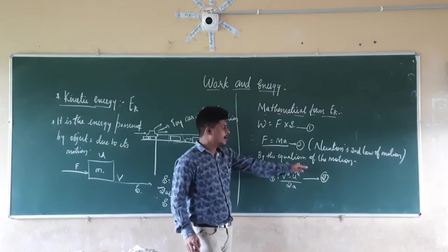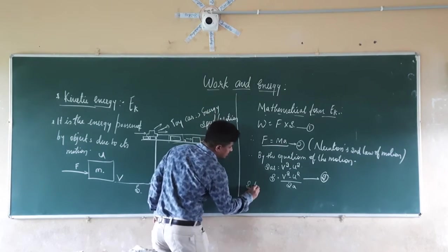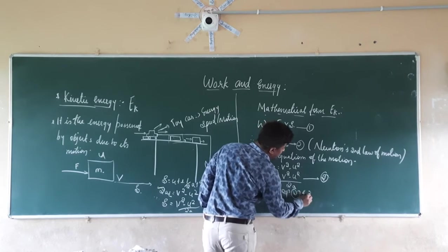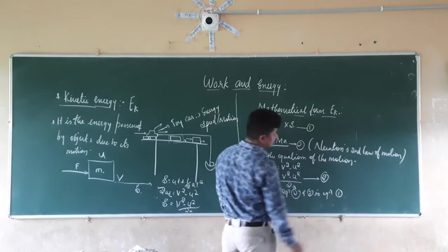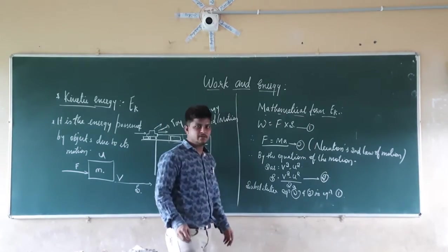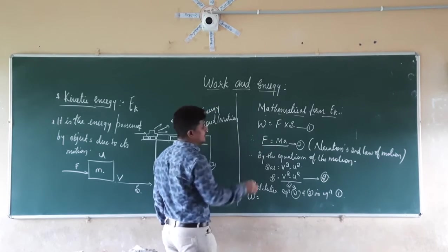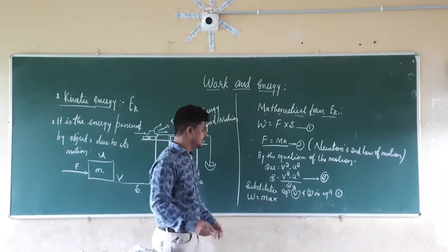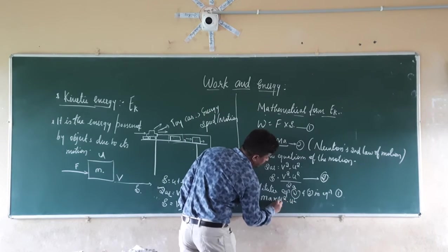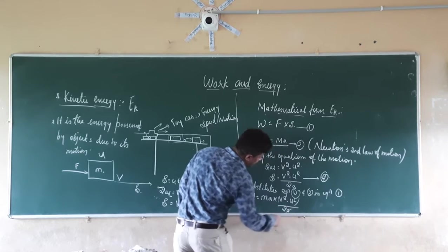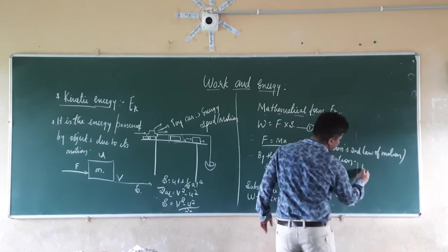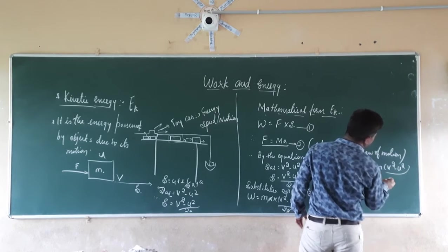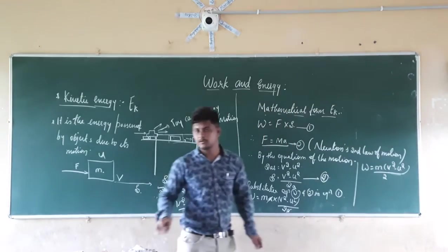Now substitute equation 2 (F = ma) and equation 3 (s = (v² − u²)/2a) into equation 1 (W = F × s). So W = m × a × (v² − u²) / 2a. The 'a' cancels, and W = m(v² − u²) / 2.